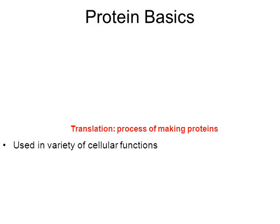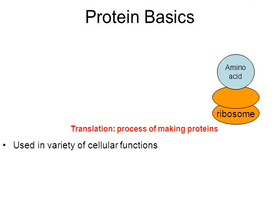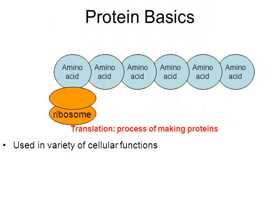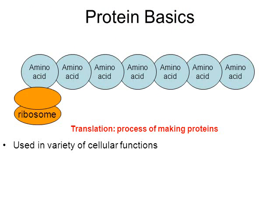The last process I want to mention is called translation. In this process, a ribosome is going to make proteins with the help of other kinds of proteins called enzymes. A ribosome gathers one amino acid after another, linking them into a big long chain. And that's what a protein is — a big chain of amino acids. All of these processes require proteins.